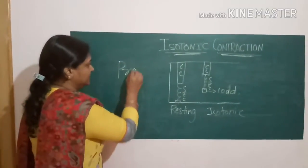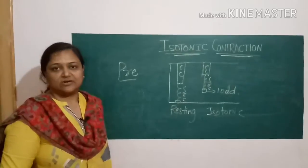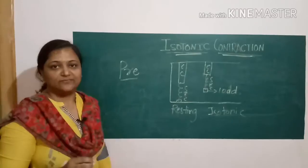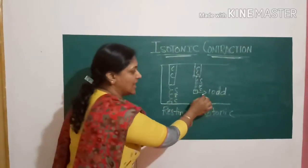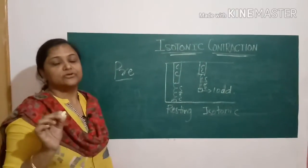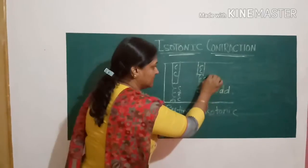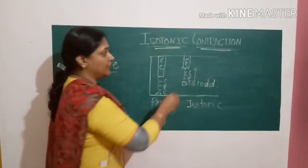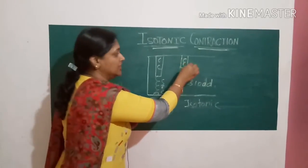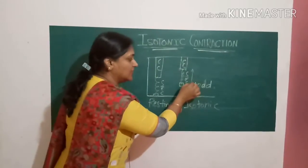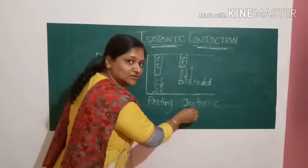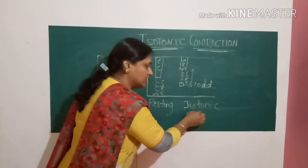In preloaded conditions the series elastic component is already stretched, so the contraction is used directly to lift the load. In afterloaded conditions, the initial contraction is used to stretch the series elastic component; later the contractile component lifts the load. Thus there is both isometric contraction in the initial phase and isotonic contraction in the later phase.